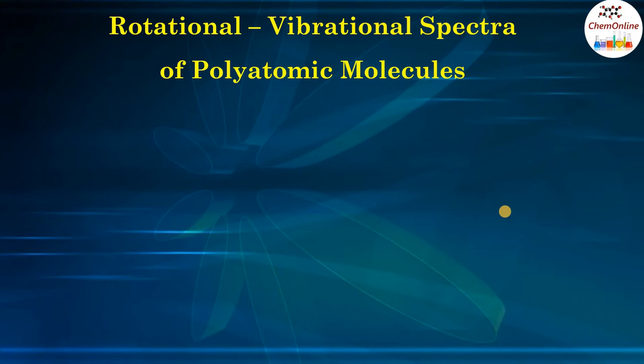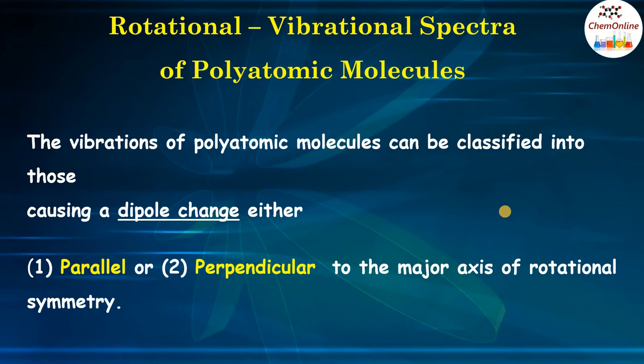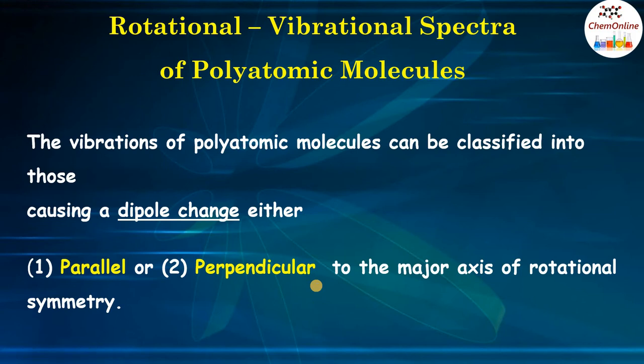Now let us discuss the rotational-vibrational spectra of polyatomic molecules. The rotational-vibrational spectra of diatomic molecules give rise to equally spaced lines for P and R branches in the first approximation. For IR activity, there must be a change of dipole moment during the vibration. For polyatomic molecules, vibrations can be divided into two categories: vibrations causing a dipole change parallel to the major axis of rotational symmetry, or perpendicular to it — called parallel and perpendicular vibrations respectively.